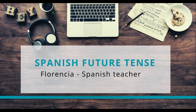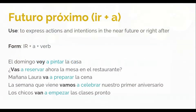Spanish future tense. The first type I'm going to explain today is called futuro próximo, or ir más a. The use of the futuro próximo is to express actions and intentions in the near future. The form is the verb ir — to go — the preposition a, and then the main verb, always in the infinitive.